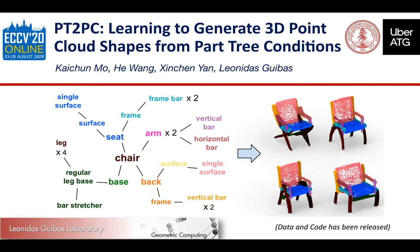We present PT2PC, learning to generate 3D point cloud shapes from part tree conditions. We formulate a novel 3D shape conditional generation task, part tree to point cloud, PT2PC.